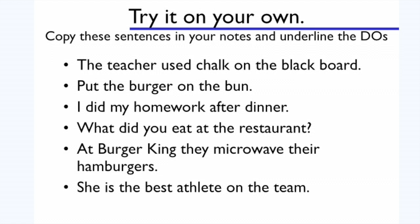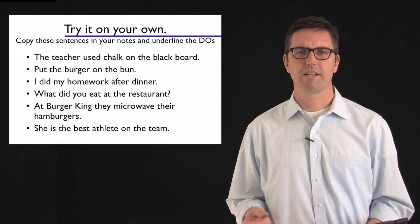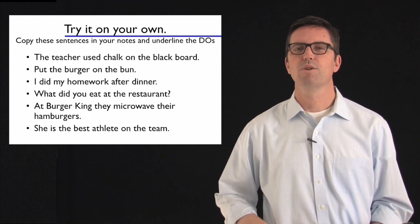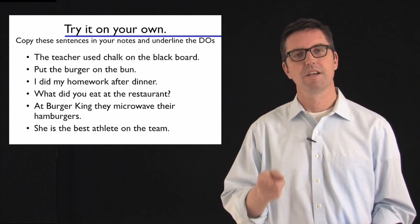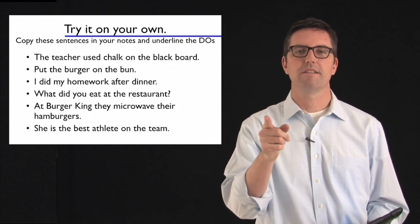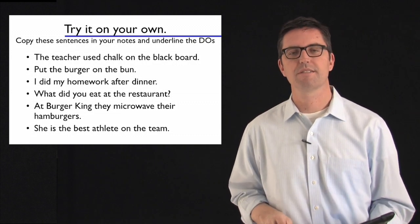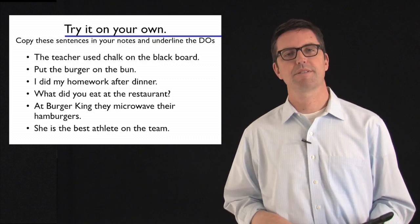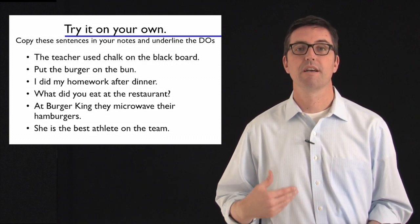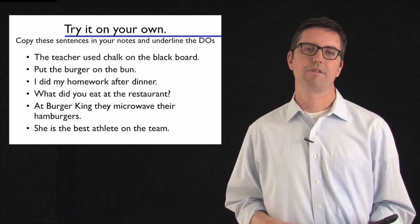Secondly, put the burger on the bun. Any prepositional phrases? Sure is, on the bun. So let's cross out on the bun. We're now left with put the burger. Now this one's a little tricky. Let's find the verb. Put. Who's doing the putting? This is one of those commands. You put the burger on the bun. So it's the you understood. So the subject is the you in parentheses. Put is the verb. Now it's time to find the direct object. What gets put? Burger. Burger is the direct object.